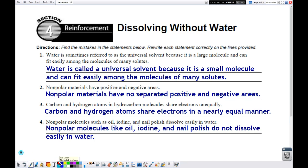So the first statement is, water is sometimes referred to as the universal solvent because it is a large molecule and can easily fit among other molecules of many solutes. The wrong word here is large, it's actually a small molecule. The correct statement is, water is called the universal solvent because it is a small molecule and can fit easily among the molecules of many solutes. Given enough time, water can dissolve just about everything.